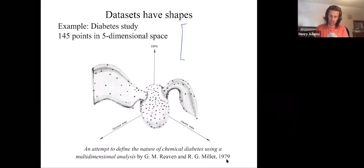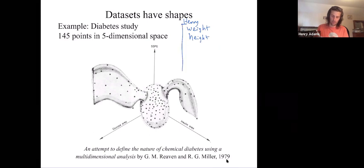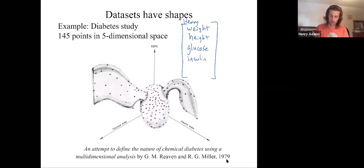So for each patient — let's say this is me, the patient Henry — they measured my weight, my height, my glucose level, my insulin level, and then they measured this interaction between my glucose and insulin level.